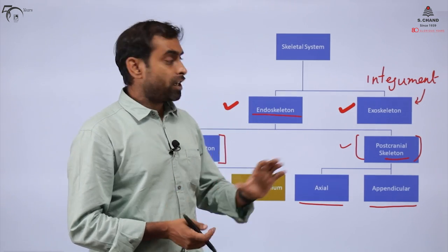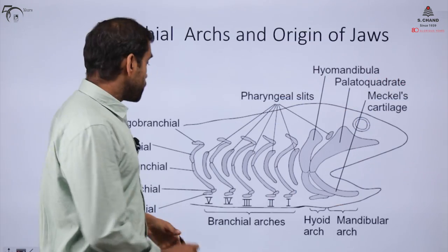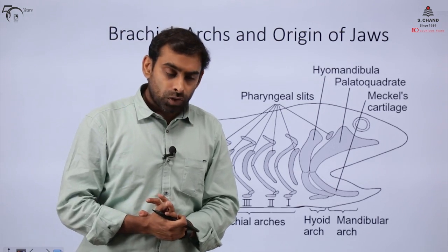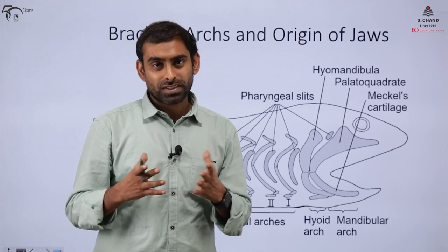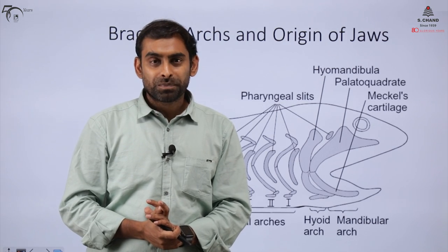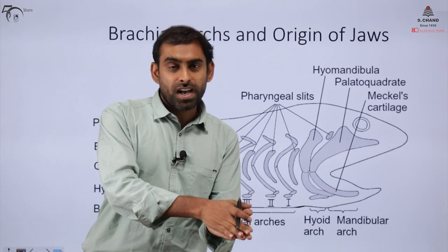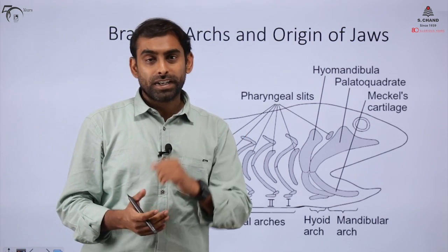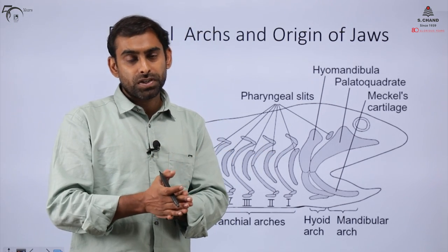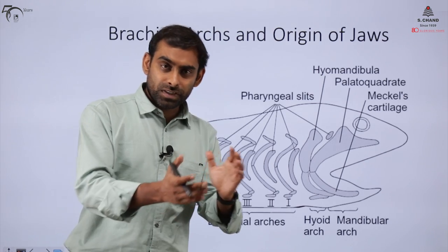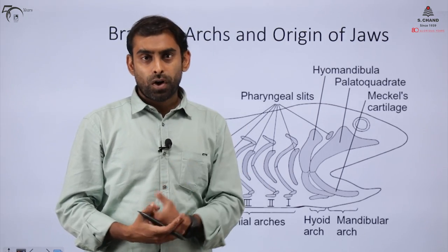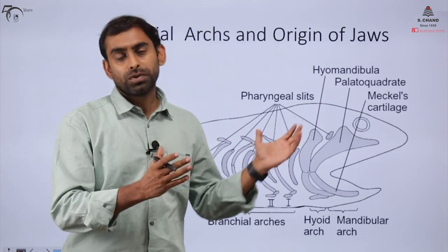When we talk about the cranium, especially the skull and jaws, you might be curious about how jaws developed during evolution. Some fish, like Petromyzon, a very primitive fish, don't have jaws at all, and even some proto-chordates lack jaws. During the course of evolution, how did these jaws evolve, and what was the underlying organ responsible for their development?